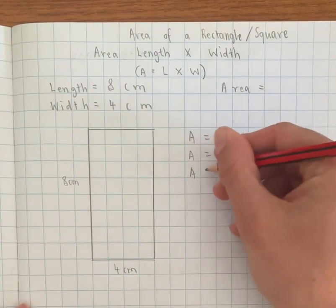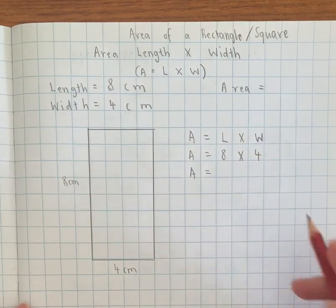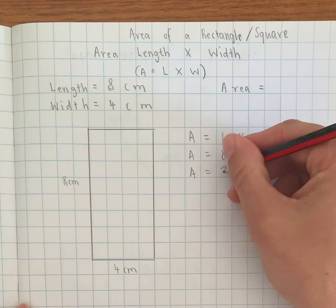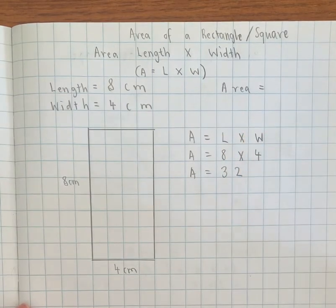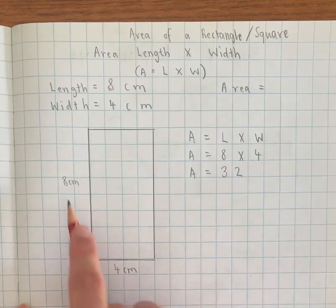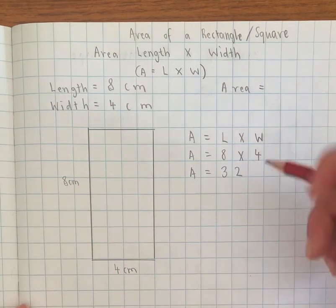Okay, and then it's a simple matter of using my times tables: 8 times 4 is 32, which means the area is 32. But 32 what? That's where I need to have my centimeters squared at the end.